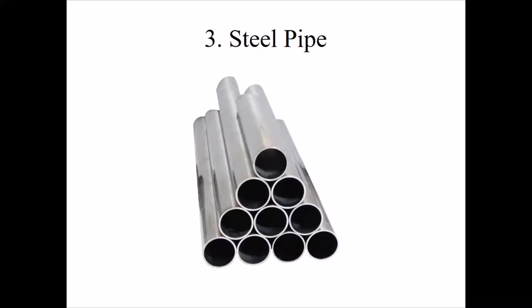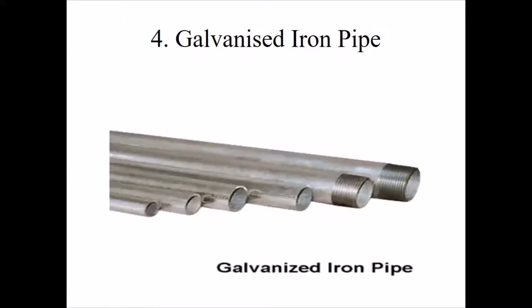Galvanized iron pipes are manufactured by galvanizing iron pipes. They are economical, light, and easy to handle and transport. They can be easily cut, threaded, and joined by sockets. However, these pipes are liable to be affected by acidic or alkaline water and are suitable for service connections.